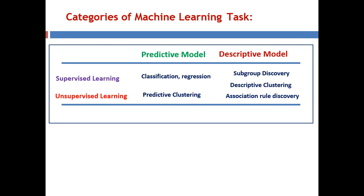Looking at the categories of machine learning tasks: supervised learning tasks use the predictive model — specifically classification and regression — as well as the descriptive model for subgroup discovery and descriptive clustering. In unsupervised learning, predictive clustering uses the predictive model, whereas association rule mining — sometimes also referred to as market basket analysis — uses the descriptive model.